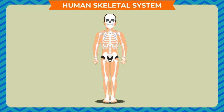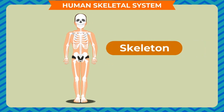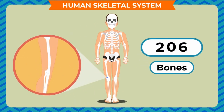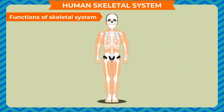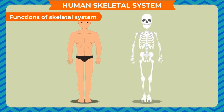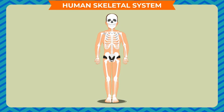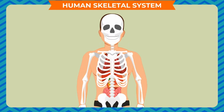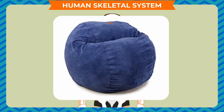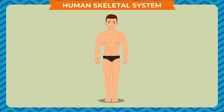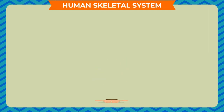Human skeletal system: The bones in our body make up a framework called the skeleton. The skeleton of an adult human being is made up of 206 bones. Our body has a number of soft organs and muscles. It is necessary to have a hard framework to support these organs. Otherwise, our body will be like a bean bag — we would not be able to stand up or walk. Without bones, we would have a puddle of skin and guts on the floor.